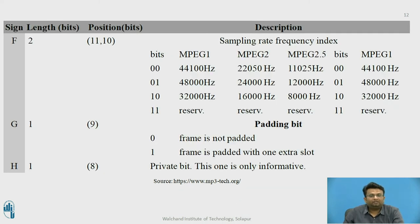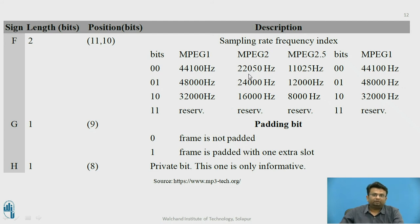Field F is 2 bits at positions 11 and 10, defining the sampling rate frequency index. For bit 00: MPEG1 = 44,100 Hz, MPEG2 = 22 kHz, MPEG2.5 = 11 kHz. For bit 01: MPEG1 = 48 kHz. For bit 10: MPEG1 = 32 kHz, MPEG2 = 16 kHz, MPEG2.5 = 8 kHz. 11 is reserved for all versions.